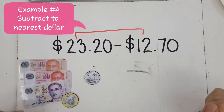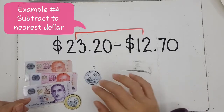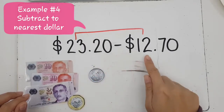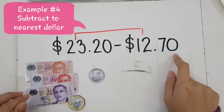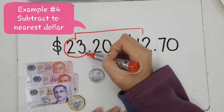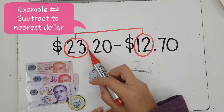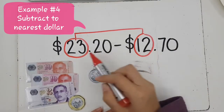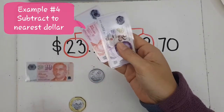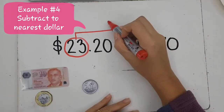In our next example we use a similar but slightly different method. We have $23.20 minus $12.70. As before, we subtract the dollars first. The dollars before the decimal point: 23 minus 12. I take away 12 and I'm left with eleven dollars. I write $11 on top.